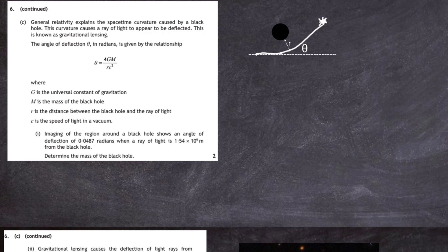The angle of deviation theta, measured in radians, is given by the relationship theta equals 4GM divided by rc squared, where G is the universal constant of gravitation, M is the mass of the black hole, r is the distance between the black hole and the ray of light, and c is the speed of light in a vacuum. For part i, imaging shows an angle of deflection of 0.0487 radians when a ray of light is 1.54 times 10 to the power 6 metres from the black hole, and we must determine the mass of the black hole.